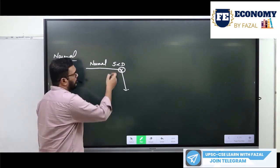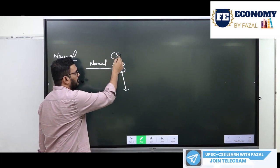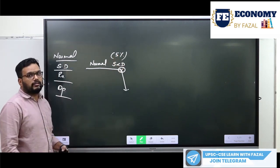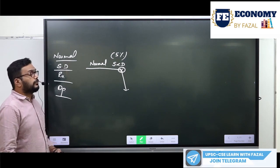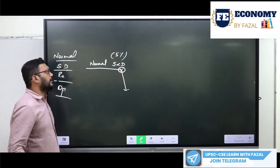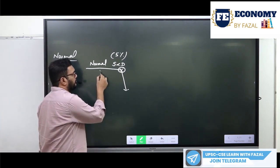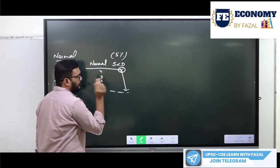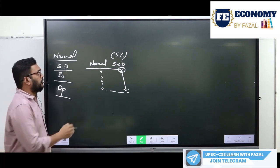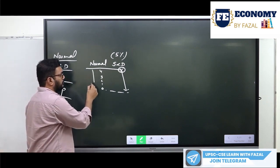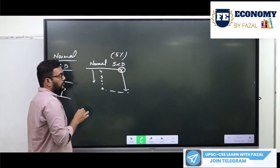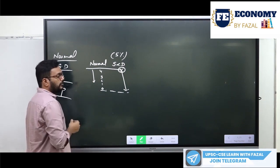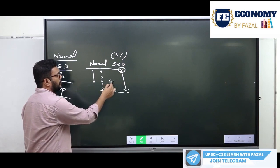Imagine in a normal phase the growth levels are at 5%. Due to the cutoff in supply and demand, it will fall — 4, 3, 2, 1, and 0. This fall in the growth rate from the normal stage down to level 0 is called a slowdown.